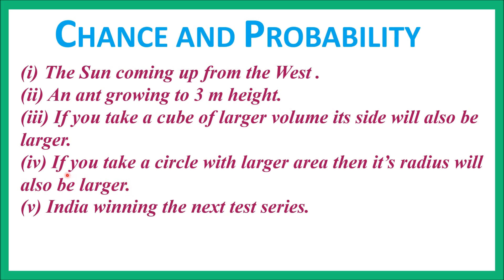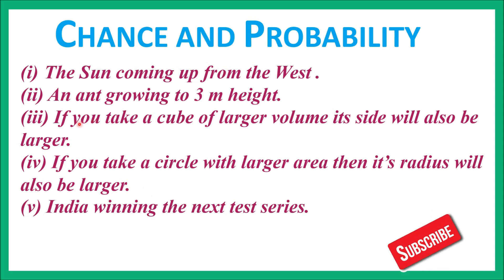On the other hand, if you take a circle with larger area, then its radius will also be larger — this is a sure event. The same applies to: if you take a cube of larger volume, its side will also be larger. These two are sure events. Now, India winning the next test series — this may happen or may not happen. Both are possible. So events may be possible, impossible, or may or may not be possible — there are many possibilities.